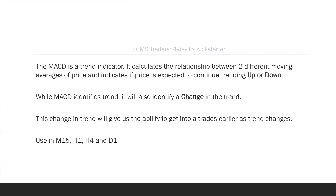The MACD is a trend indicator. It calculates the relationship between two different moving averages of price and indicates if price is expected to continue trending up or down. While MACD identifies trend, it also identifies a change in trend, giving us the ability to get into trades earlier as trend changes.